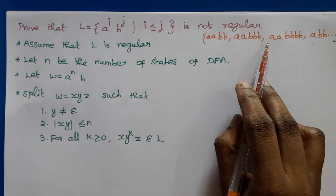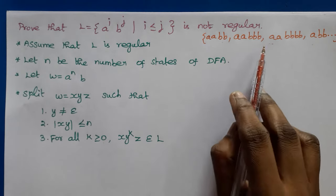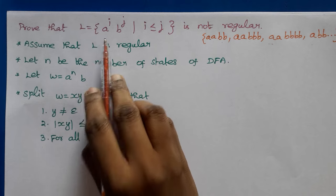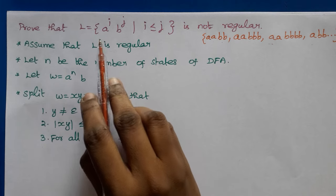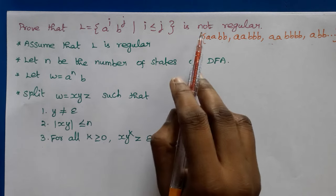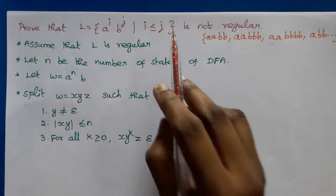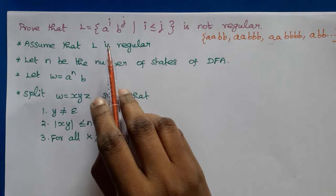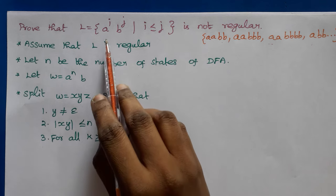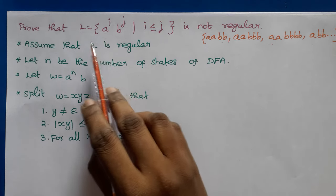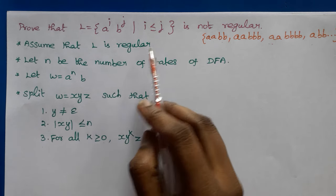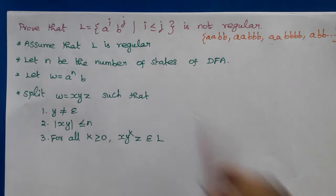These are the strings accepted by this language, but we need to prove that this language is not regular. If we find a string with more A's than B's, then we can say that the language is not regular.